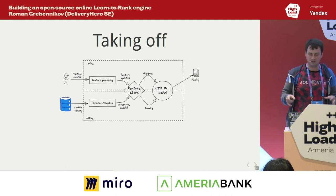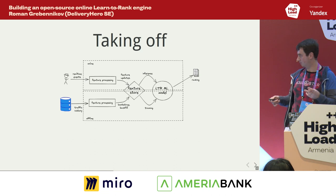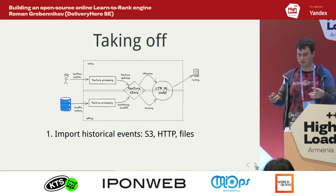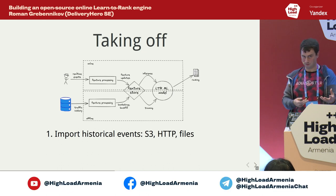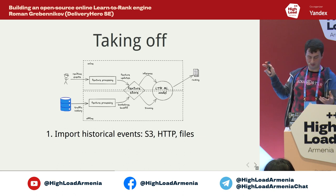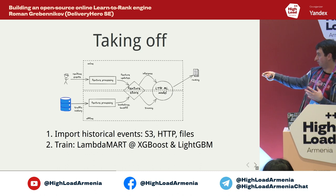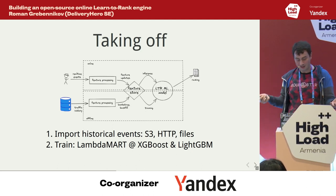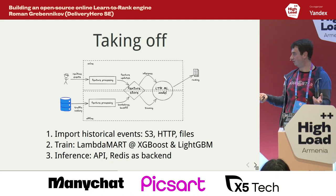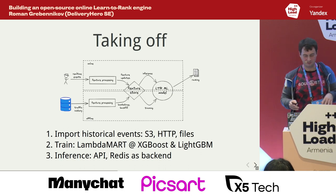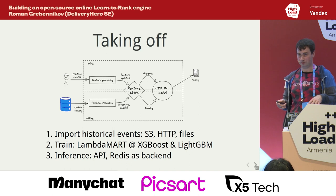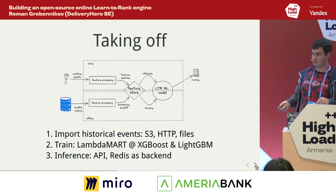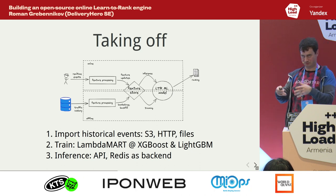To start working with MetaRank you need just a couple of things. First, historical click-through data — it needs to know how people interacted with your ranking before, in a specific format. You train a LambdaMART model; we support XGBoost and LightGBM. There will probably be CatBoost support in the future — the challenge is that CatBoost and JVM have a complicated relationship. Then you run an inference API with Redis as a backend for inference features.